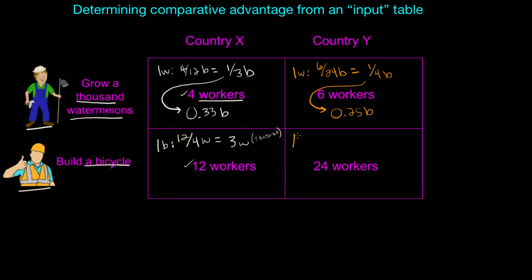For bicycles in Country Y, twenty-four workers are needed. How many watermelons could those twenty-four workers have produced? Since only six workers are needed to produce a thousand watermelons, the opportunity cost of each bicycle is four thousand watermelons.